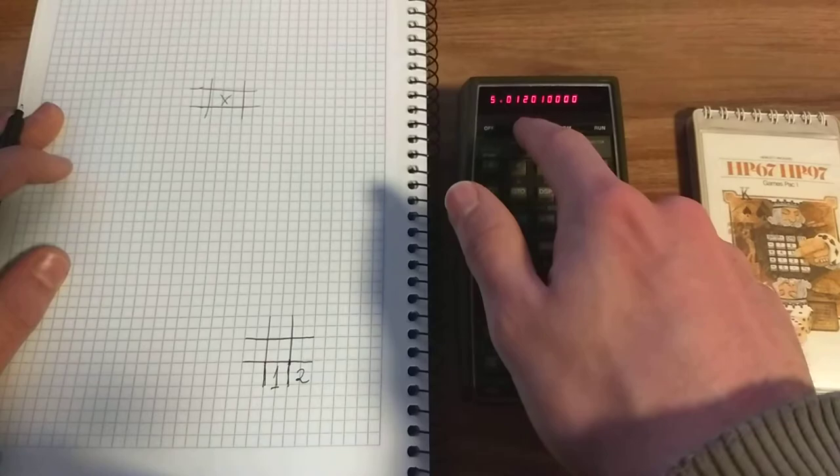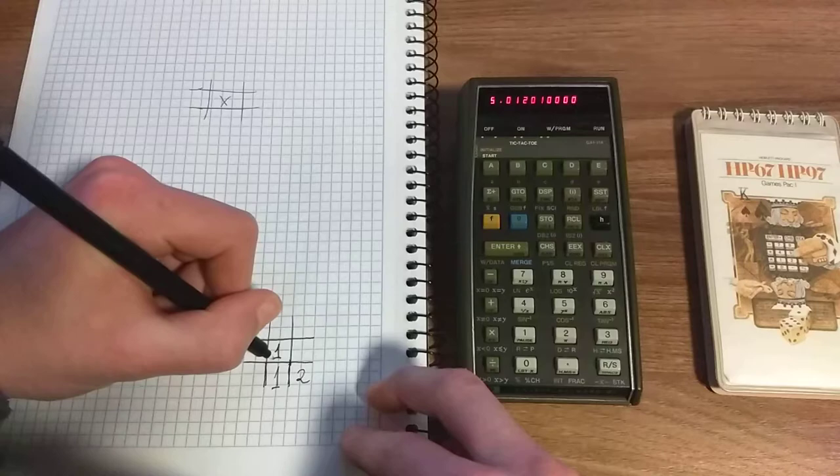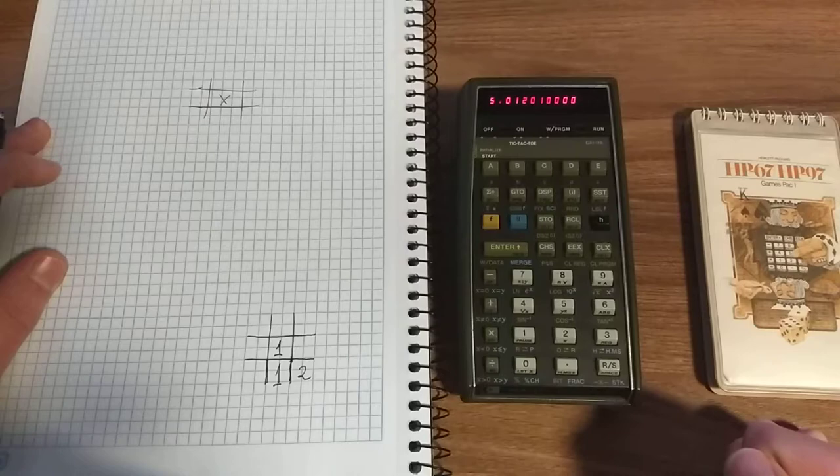Let's say if I want to block the calculator from winning, I'll go here. This corresponds to position eight. I press eight, then run and stop, so it goes through the calculation.